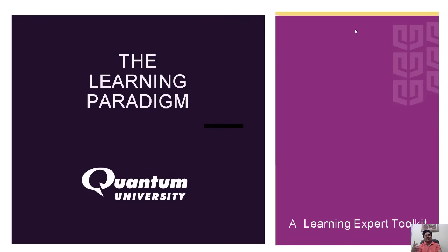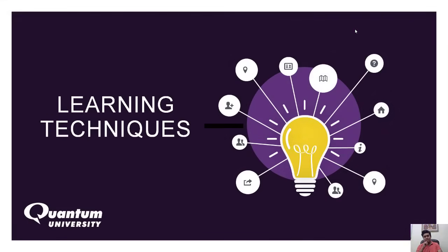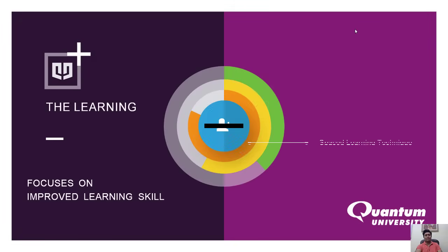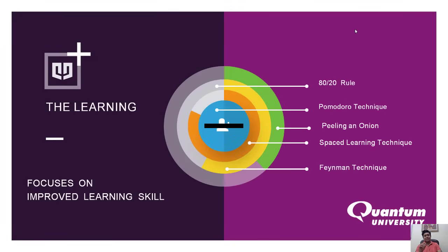It's a pure plug-and-play based toolkit. In this series, we'll teach you five learning techniques: the Feynman technique, spaced learning technique, peeling an onion technique, Pomodoro principle, and the 80-20 rule. Believe me, if you follow these five principles, your learning will be sharper, stronger, and your retention rate will be high. After this series, I'll give you a bonus technique which will be a great topping on the series.